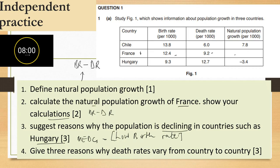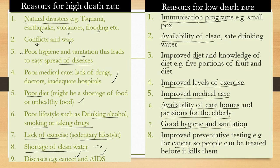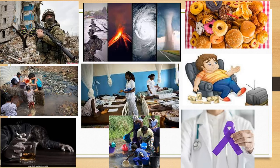For Hungary's low birth rate, you should bring in supporting reasons such as education and awareness about family planning, emancipation of women with the freedom to work, availability of contraceptives, and low infant mortality meaning they don't feel the need to have many children. Question four: give three reasons why death rate varies from country to country. This is simply asking for reasons for either high or low death rate — refer back to what we've covered. Thank you very much for this first section, and please stay tuned for part two.